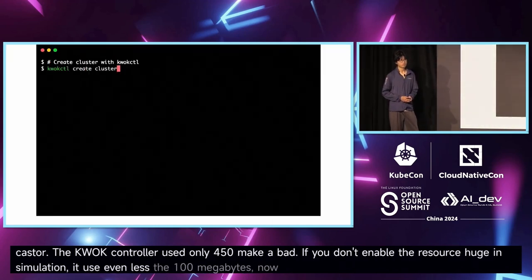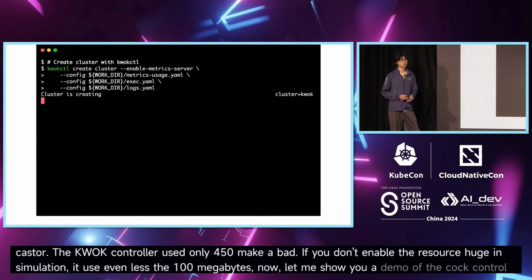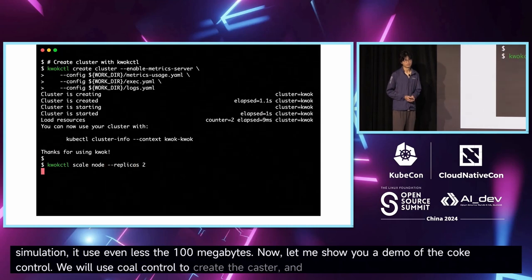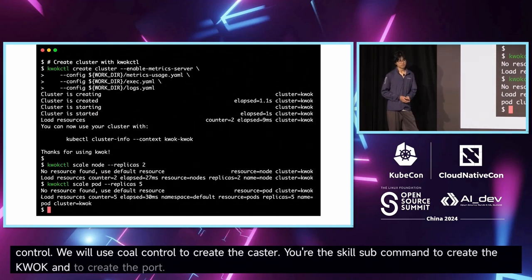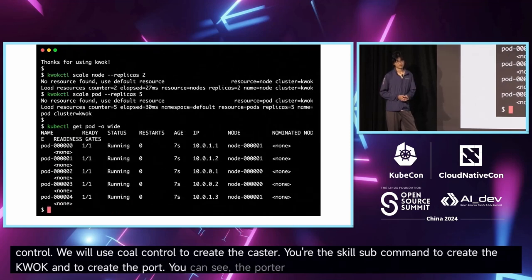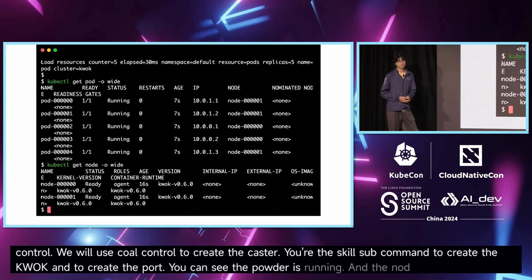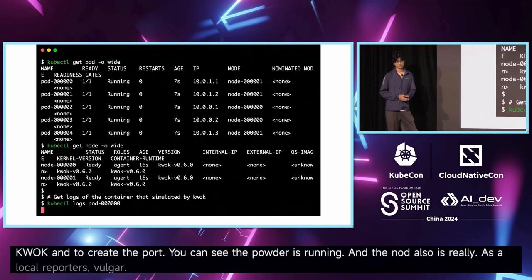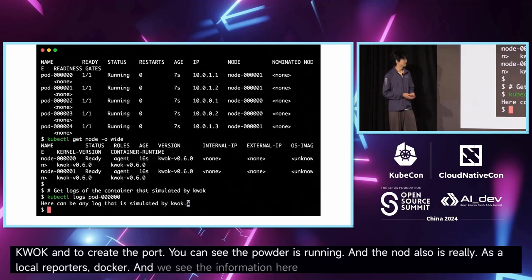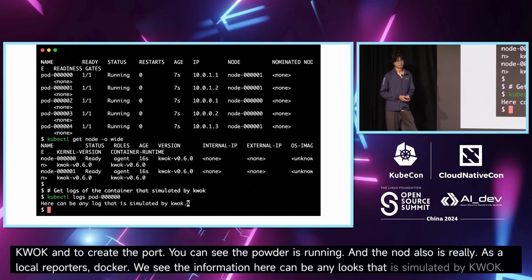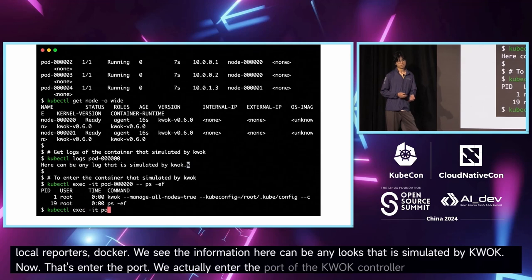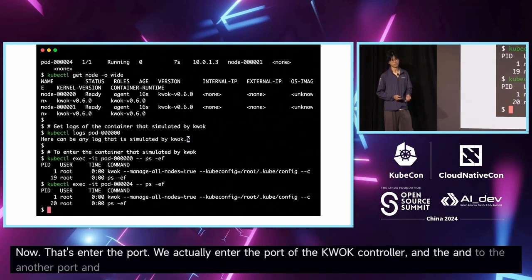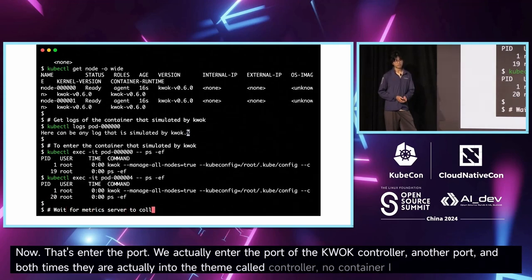Now let me show you a demo of Quark Control. We will use Quark Control to create a cluster and use a scale subcommand to create nodes and pods. You can see the node is ready. Let's look at the pod logs and see the information — here the logs can be anything simulated by Quark. Now let's exec into the pod. We actually enter the Quark Control process, and entering another pod also enters the same Quark Control. No container is actually created — the overall behavior is simulated by Quark.